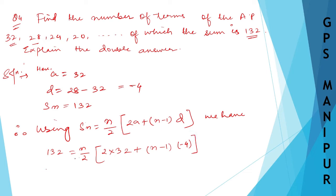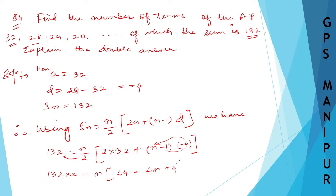Multiplying both sides by 2: 132×2 = n × (64 + (n-1)×(-4)). Expanding: 264 = n × (64 - 4n + 4), which gives 264 = 68n - 4n².